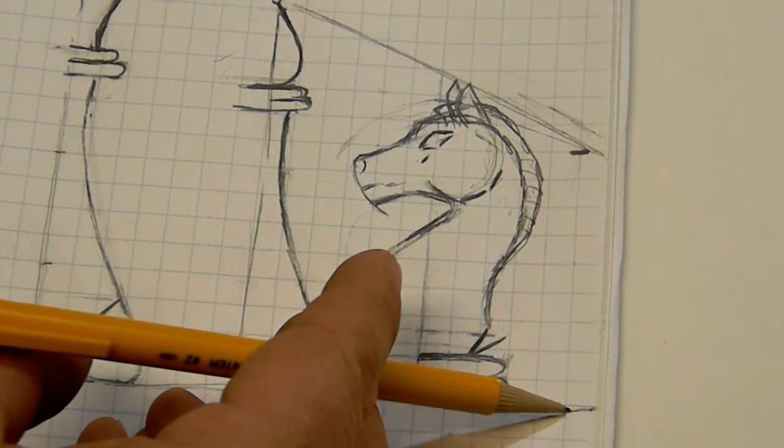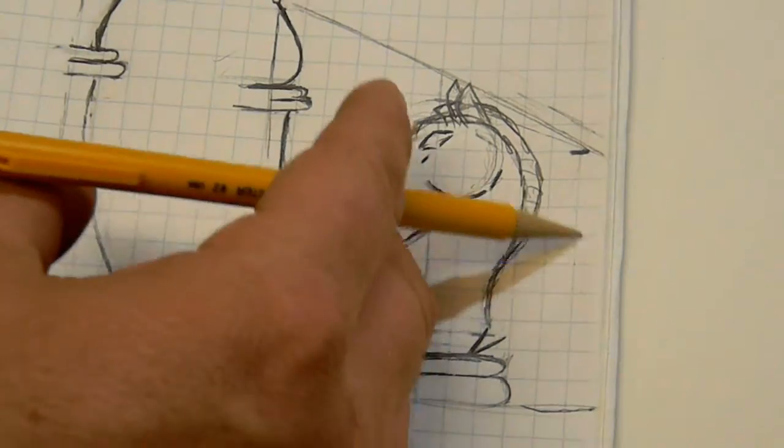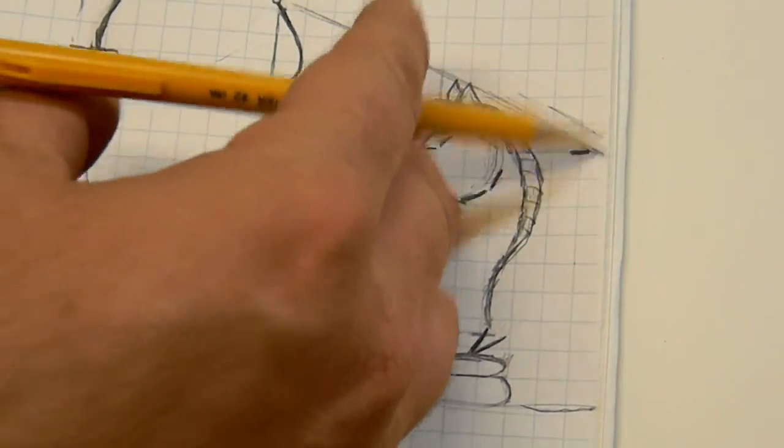So let's just make sure again what that's going to be. One, two, three, four. That's one inch. One, two, three, four. That's two inches and a quarter.